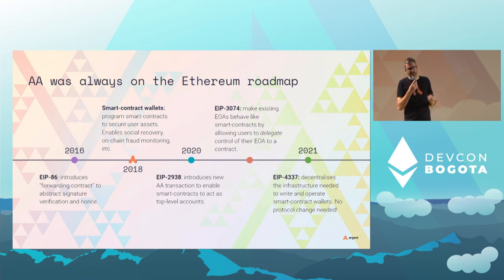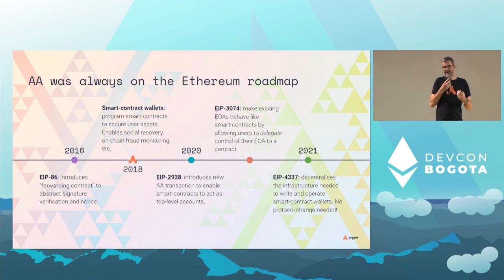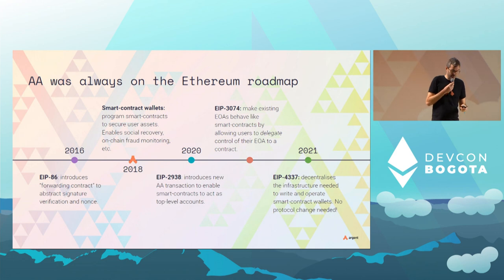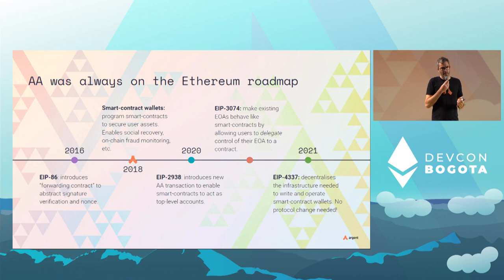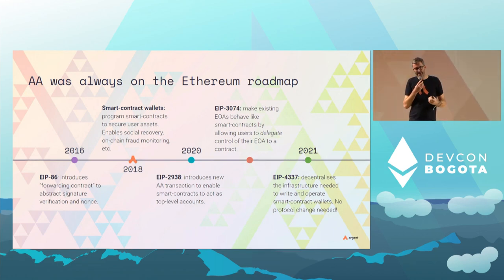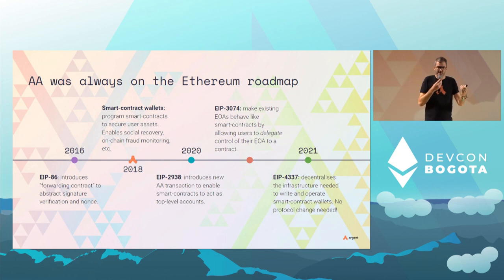Recently there was a new EIP again led by Vitalik: EIP-4337, which is essentially a generalization of smart contract wallets. The idea is to decentralize some of the infrastructure needed to write and operate smart contract wallets. EIP-4337 is interesting because it does not require a fork — it works at the application layer — and it's actually a good architecture that can lead us toward what native account abstraction should be in the future.